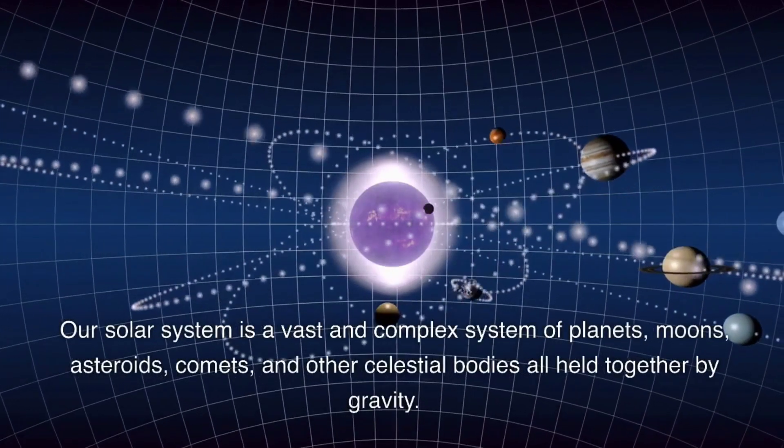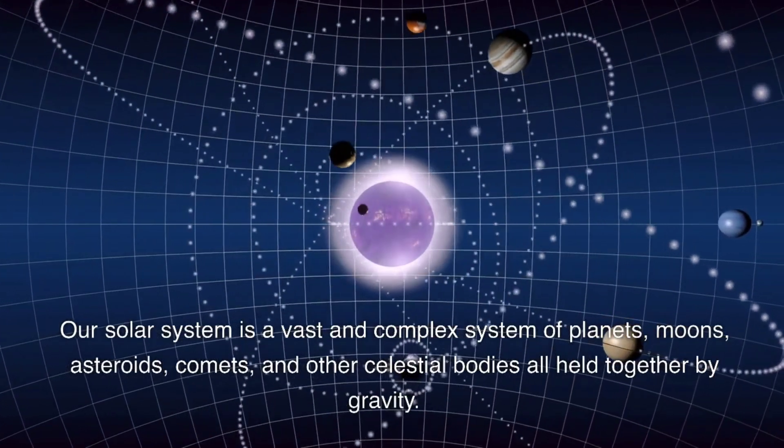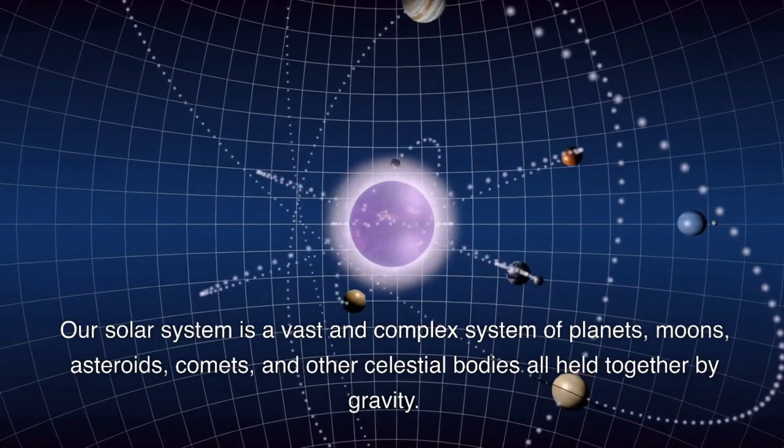Our solar system is a vast and complex system of planets, moons, asteroids, comets, and other celestial bodies all held together by gravity.